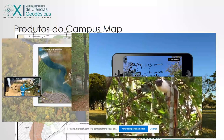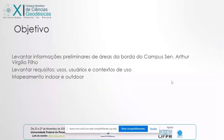O objetivo do projeto é levantar as informações preliminares da borda desse fragmento, fazer um levantamento de requisitos que tenham os usuários e os contextos de uso, para pensar nos produtos a serem desenvolvidos no mapeamento indoor e outdoor do campus. Isso tem um desafio bastante grande, porque a mesma parte outdoor é circundada de floresta. Então, esse mapeamento outdoor tende a virar também um mapeamento indoor, se a gente pensar nas aplicações de trilhas e de pesquisas que envolvam elementos abaixo do docel — que é o que a gente chama de copa das árvores.